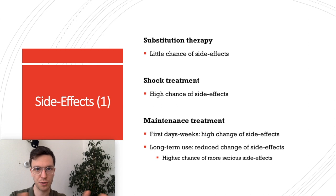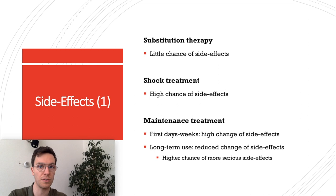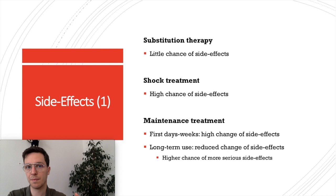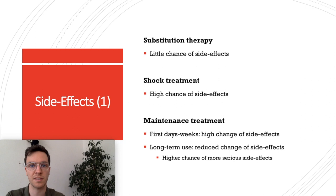Side effects mostly depend on the type of therapy. For substitution therapy, side effects are often low because small doses are taken long-term and the body adapts. For shock treatment, starting very high doses suddenly may lead to a high chance of side effects. For maintenance treatment, starting at low to medium doses increases the chance of side effects, and because it's taken long-term — months to years — the body adapts but there is a slightly higher chance of adverse side effects.